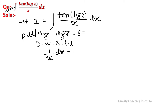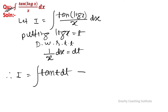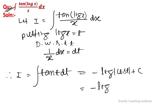Therefore I equals integration of tan(t) dt, which equals minus log|cos(t)| plus C. Substituting back, the answer is minus log|cos(log x)| plus C.